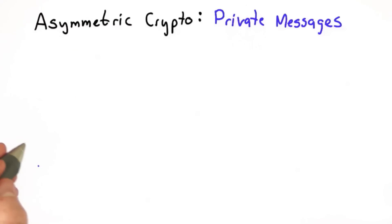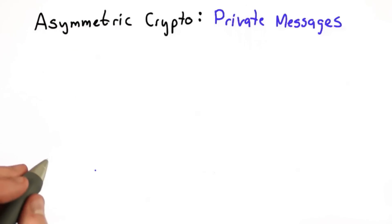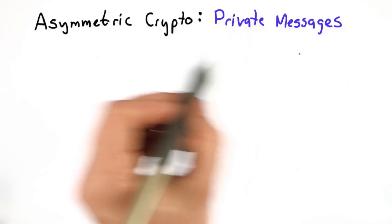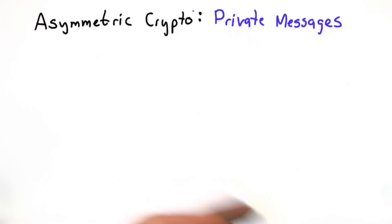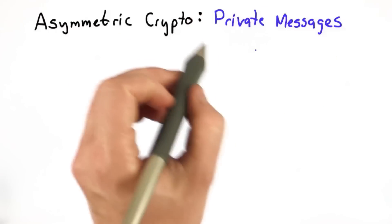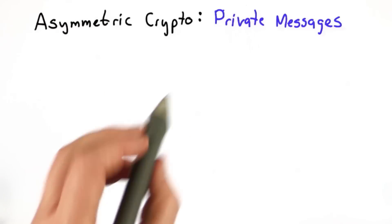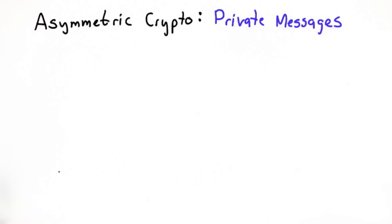Now let's look at a couple of applications if we could build a cryptosystem like this. First, we'll look at a standard use of it to send private messages. This is what our goal was initially for the symmetric cryptosystems, which assumed that we had a shared key to begin with. But now let's assume that we don't.